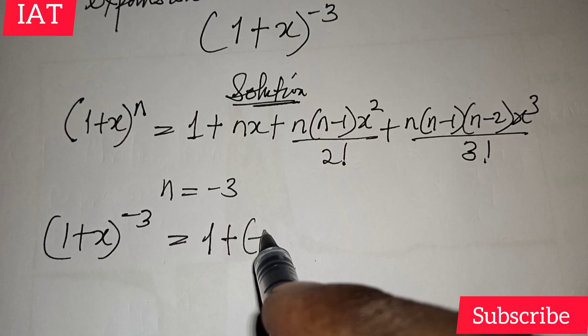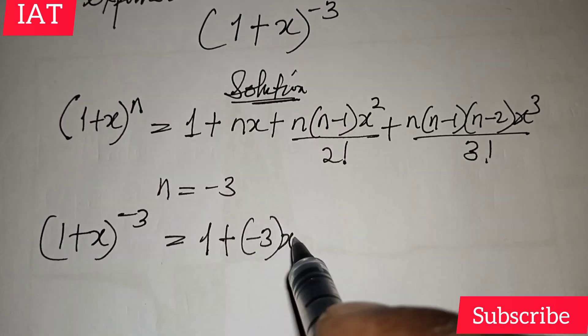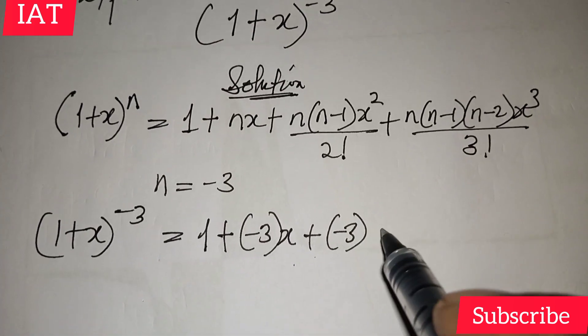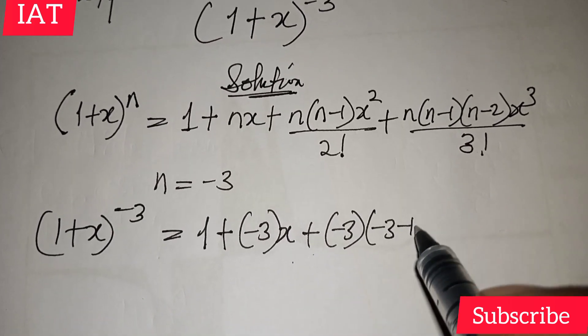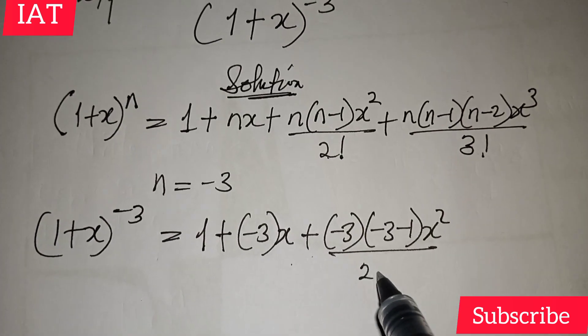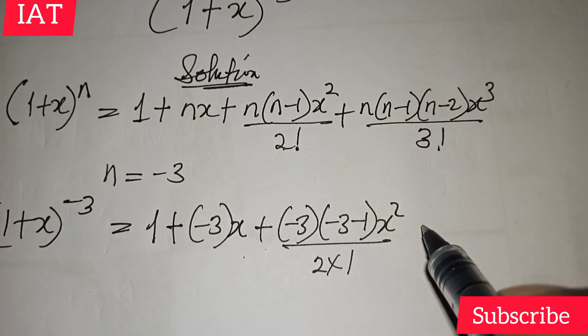So we have 1 plus (-3) times x plus (-3) into (-3-1), x squared, all over 2 factorial means 2 times 1. All right? Plus,